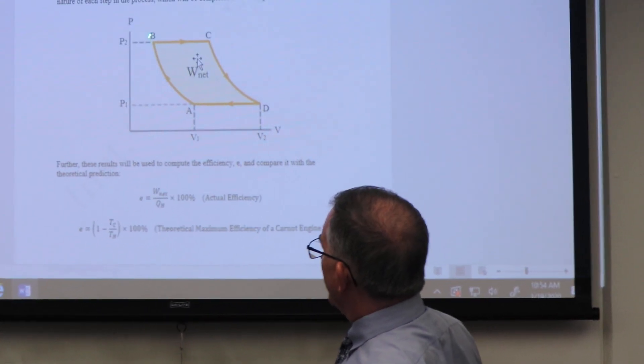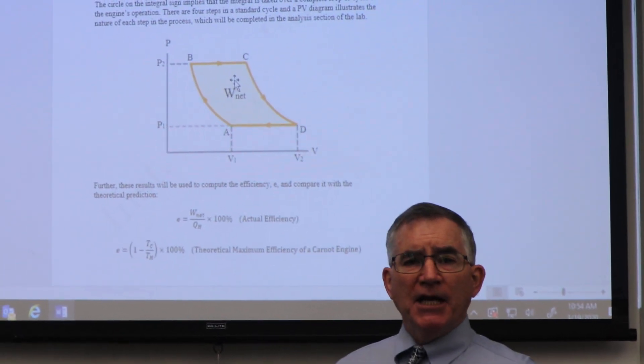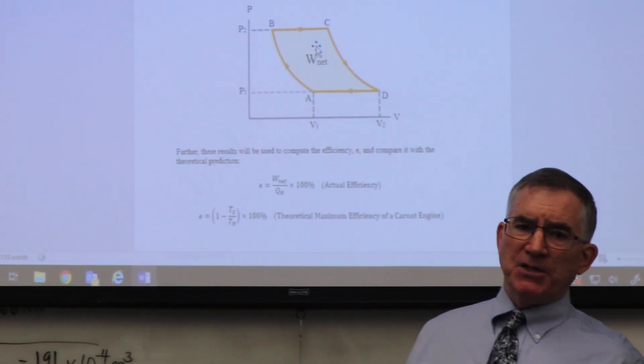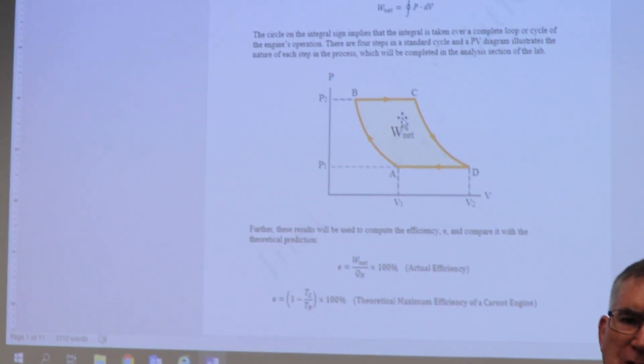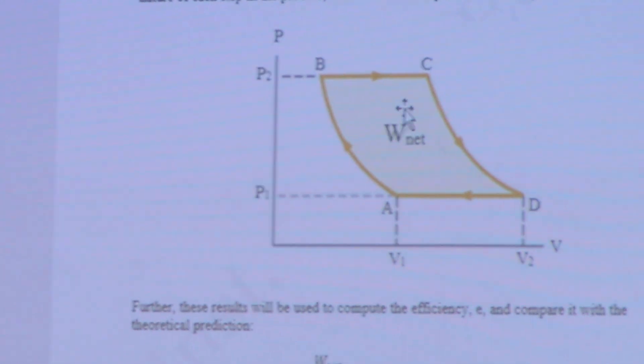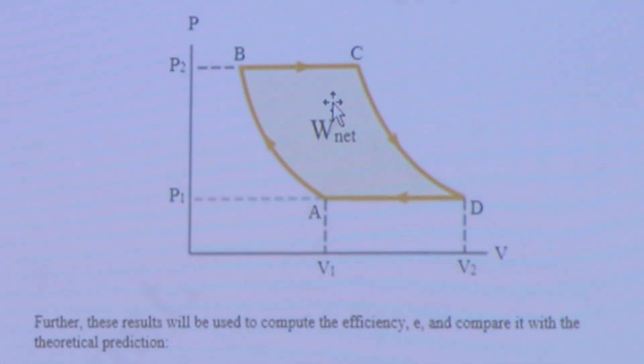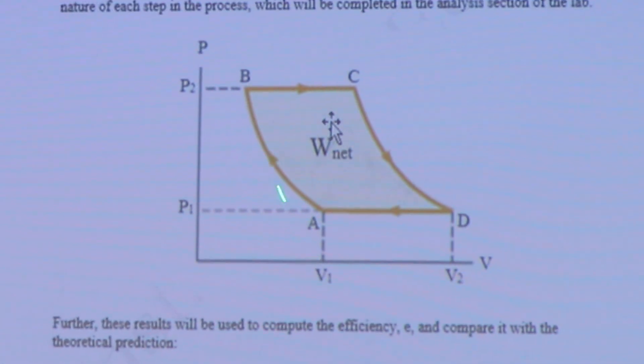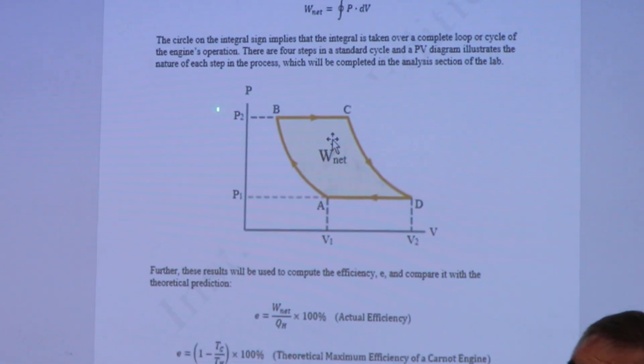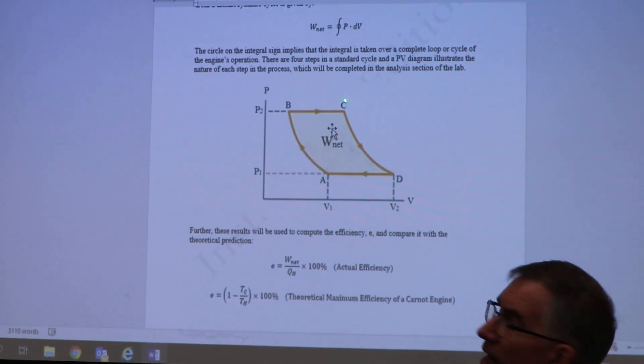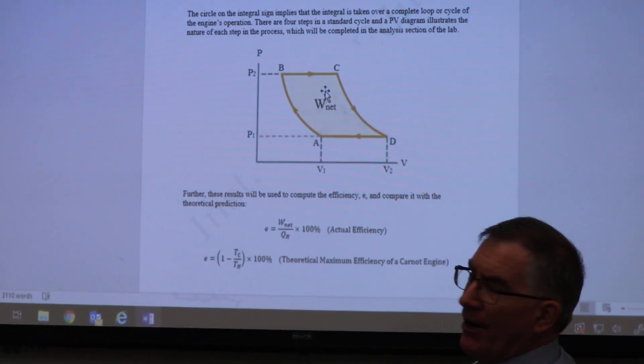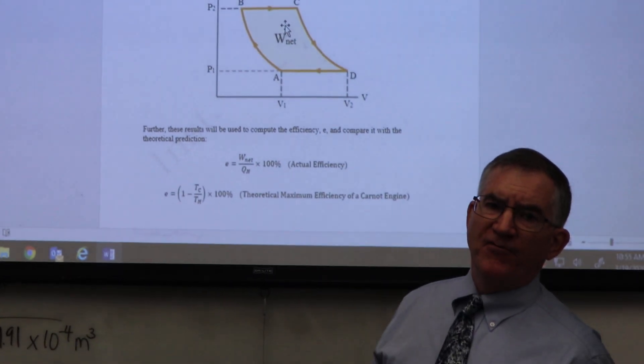This process right here, that shape right there, that's called an isothermal process. That means the temperature does not change. That means the internal energy of the gas stays constant. So during this step right here, this is one step in what's called a thermodynamic cycle, and that's that whole parallelogram-shaped figure right there.